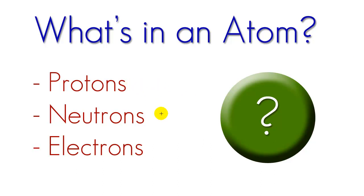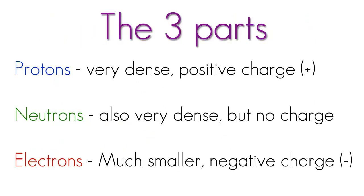So anyways, what's in an atom? Three things: protons, neutrons, and electrons. Sounds fancy enough. Let's go ahead and learn some more about those.